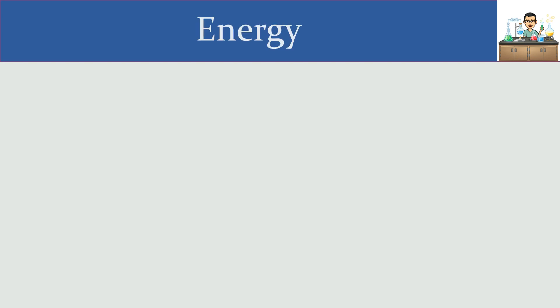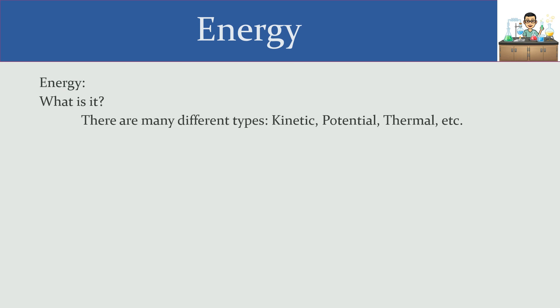Another topic that dovetails into stability and reactivity is energy. When we talk about energy, there are different types: kinetic energy, which is energy due to motion; potential energy, which is energy due to position; and thermal energy, which involves heat going in and out. From a topical perspective, things that have lots of energy — high energy things — are unpredictable.